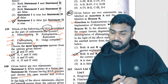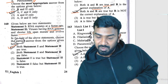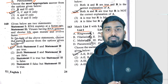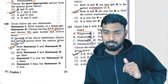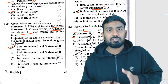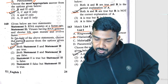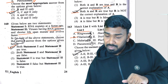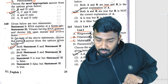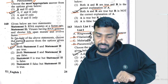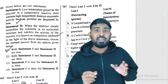Question 163: ringworm is caused by Trichophyton (fungal). Filariasis is caused by Wuchereria bancrofti or Wuchereria malayi (also called elephantiasis). Malaria is caused by Plasmodium vivax, P. malariae, P. ovale. Pneumonia is caused by Haemophilus influenzae. Q163 solved.